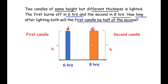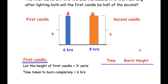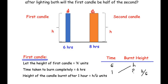Let the height of the first candle be h units. The time taken to burn completely is six hours, meaning in six hours the total candle burns down. For one hour, using cross multiplication, the height burnt is h over six units. Similarly, in two hours the height burnt is 2h over six. We can generalize: in t hours the height burnt is t times h over six.